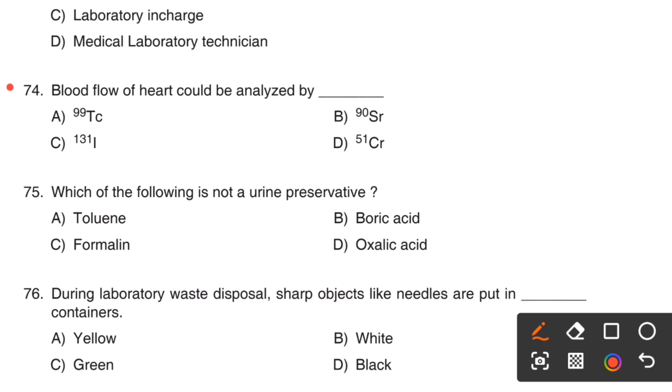Next question. Which of the following is not a urine preservative? Option A, Toluene. Option B, Boric acid. Option C, Formaline. Option D, Oxalic acid.